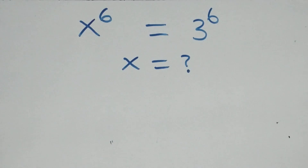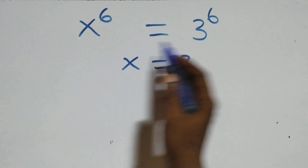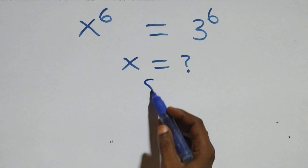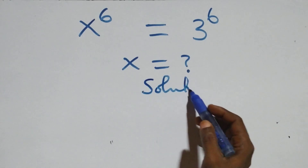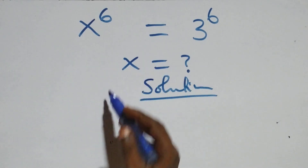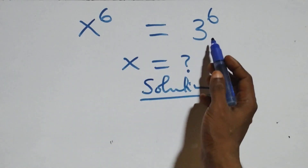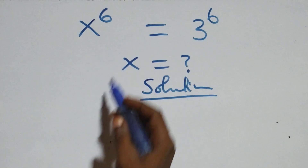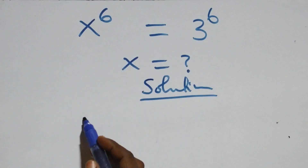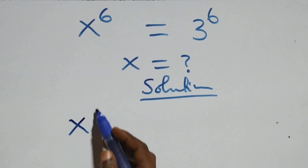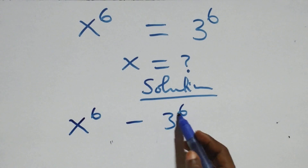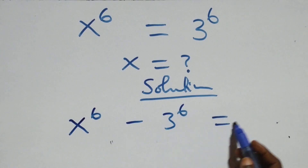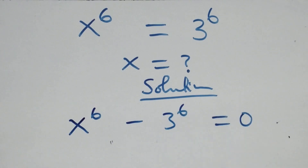Hello, you're welcome. Here we solve a nice exponential equation. We have 3 raised to power 6 on the left-hand side, and x raised to power 6 minus 3 raised to power 6 equals 0.